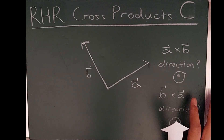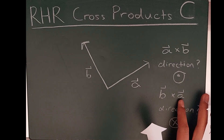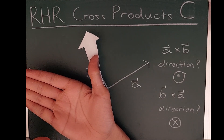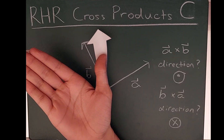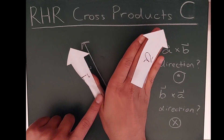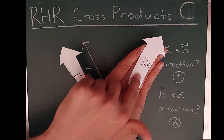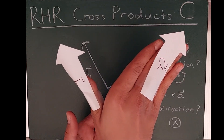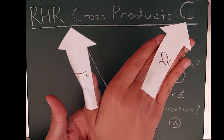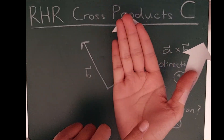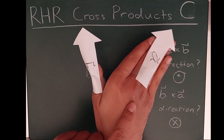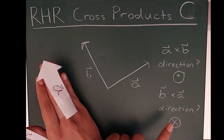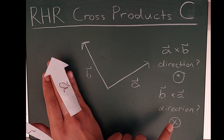For B cross A with this method: align your thumb in the direction of vector B and align the four fingers in the direction of vector A. Again, you'll likely need to invert your hand. After inverting, the palm is on the other side — pushing down into the chalkboard, into the page. So B cross A is into the page, which matches all three methods.